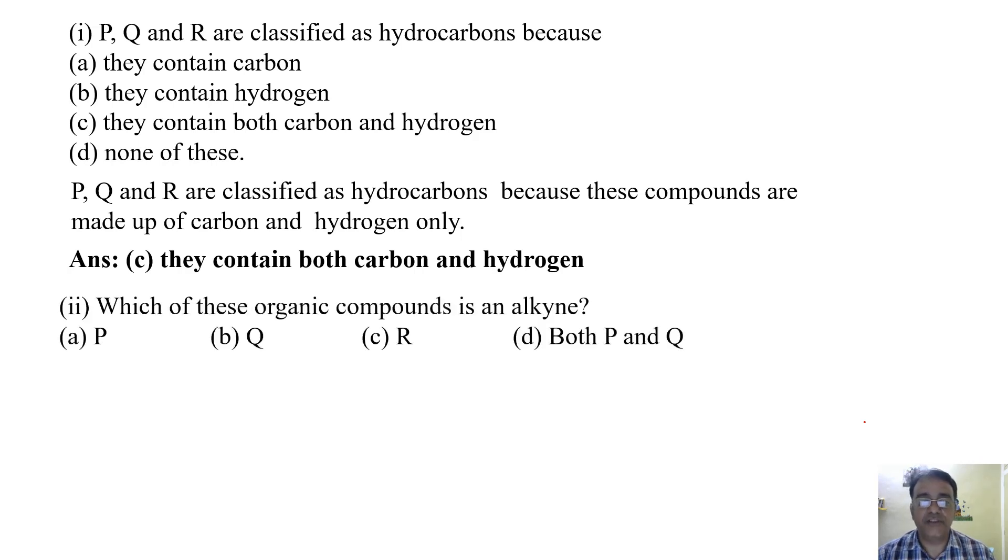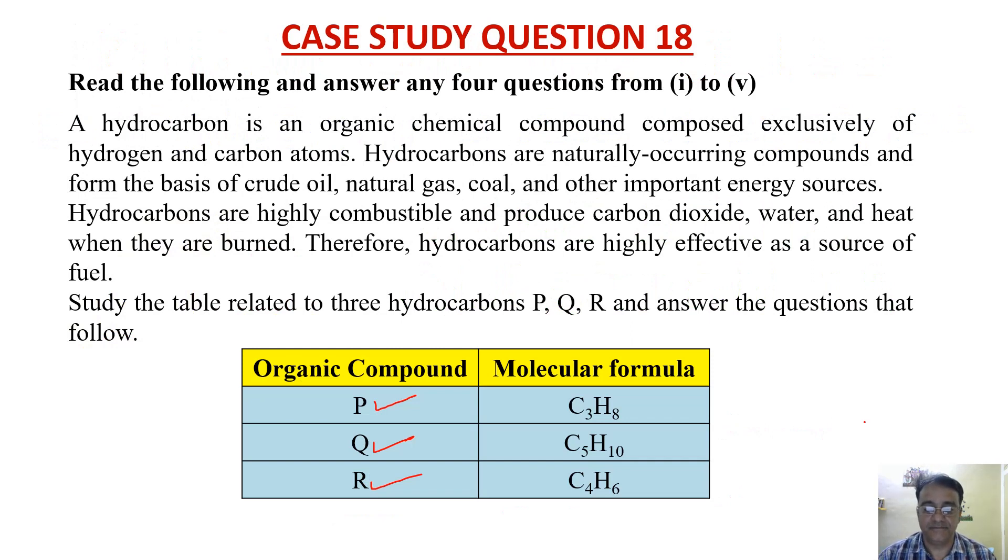Now, which of these organic compounds is an alkyne? Which one is alkyne? Alkyne ka formula kya hota hai? CₙH₂ₙ₋₂. To ismei kaun sa hai CₙH₂ₙ₋₂? Which one: P, Q, or R? CₙH₂ₙ₋₂. So R! Very good, R. So the correct answer is R is an alkyne.